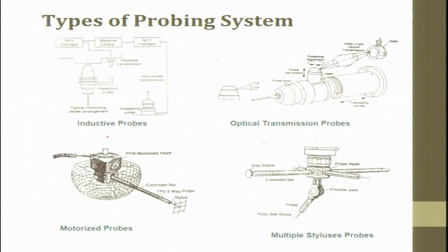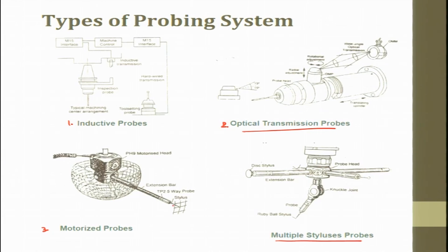Different types of probing systems exist: inductive probing system — where inductive transmission is the principle; optical transmission probes; motorized probes — where motors rotate or move the probe; and multiple styluses probes. In the first three probes, there is only one stylus. In the fourth type, multiple styluses are available — such as a ruby stylus, a disc stylus, and other different styluses — and the system can be motorized or inductive.